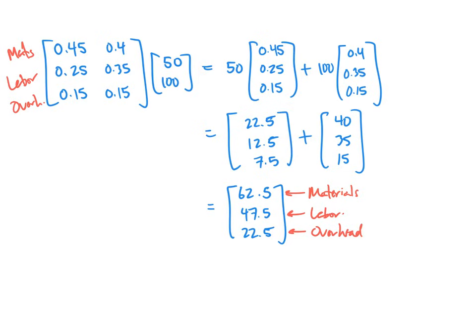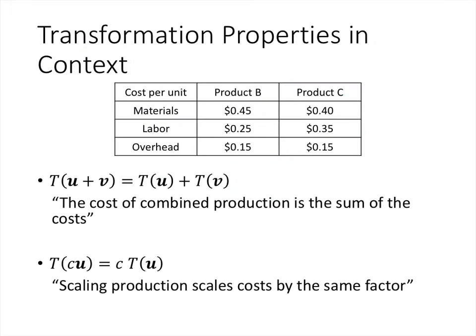This gives us a natural context where matrix multiplication arises. The linear transformation properties have real-world meaning here. The property t(u + v) = t(u) + t(v) means that combining two production vectors — say, yesterday's and today's production — gives a combined cost equal to the sum of the individual costs. The property t(cu) = c·t(u) means that doubling production doubles the cost, tripling production triples the cost, and halving production halves the cost. Scaling production scales costs by the same factor.